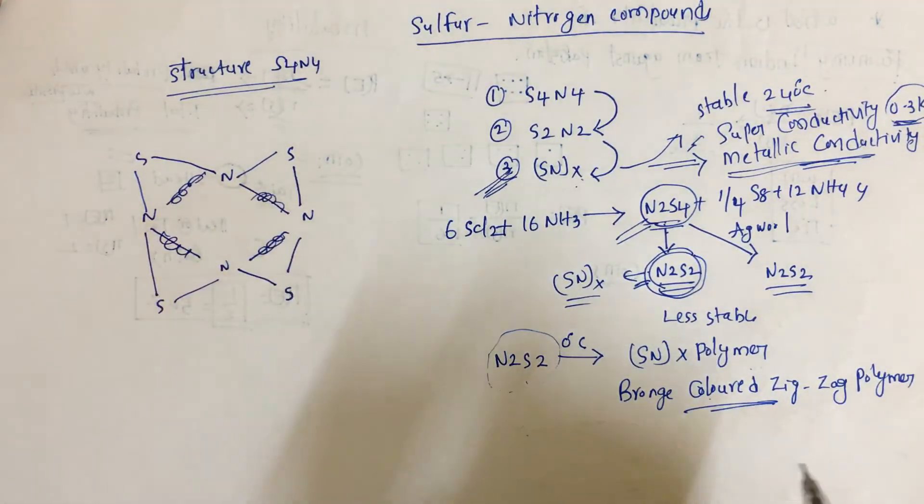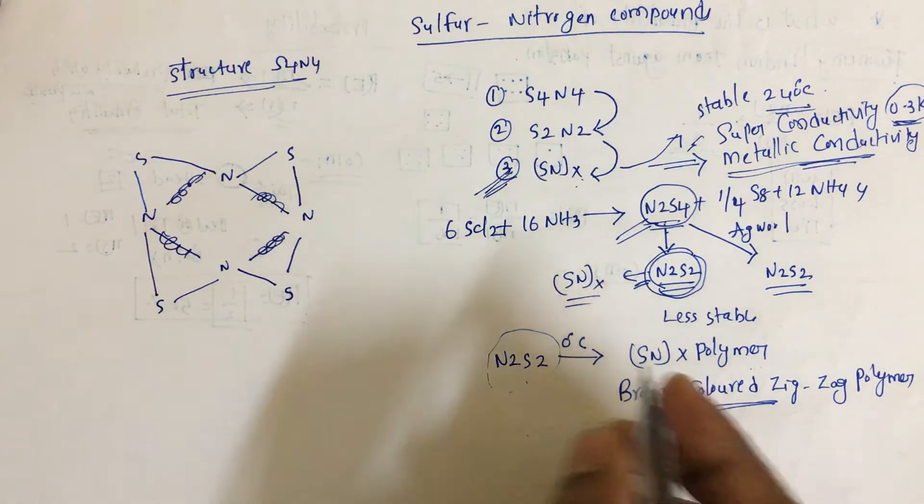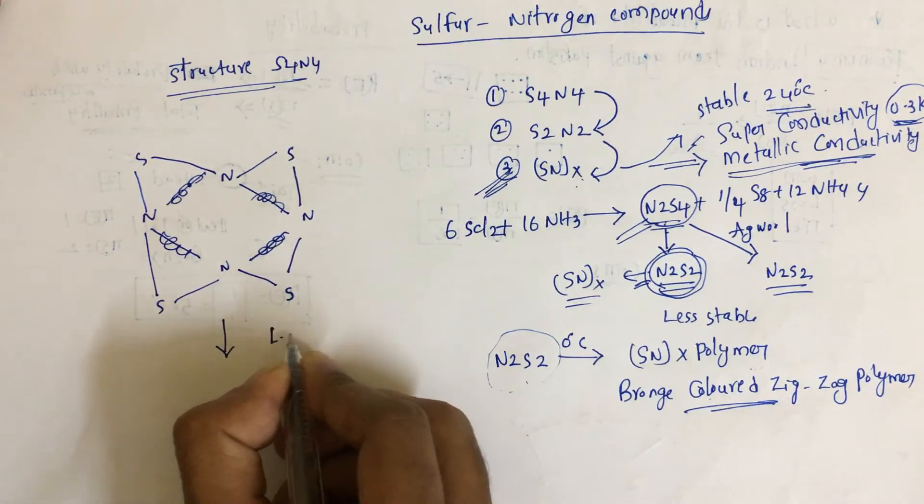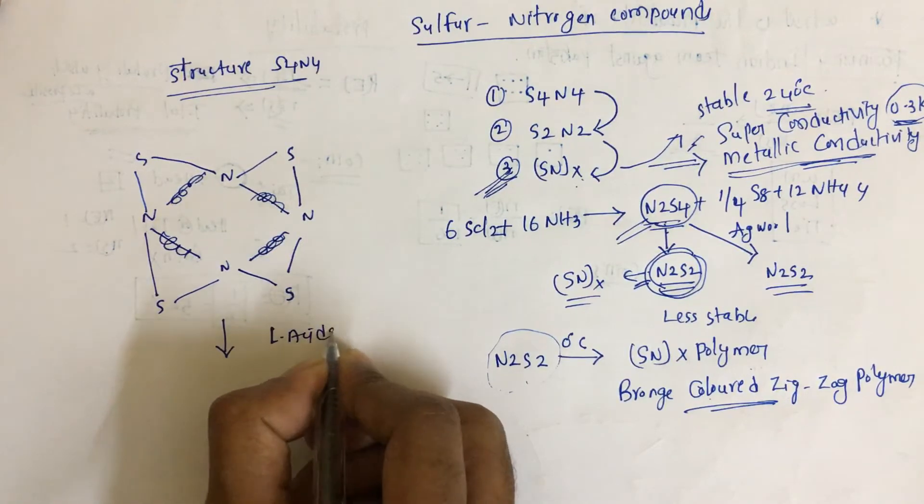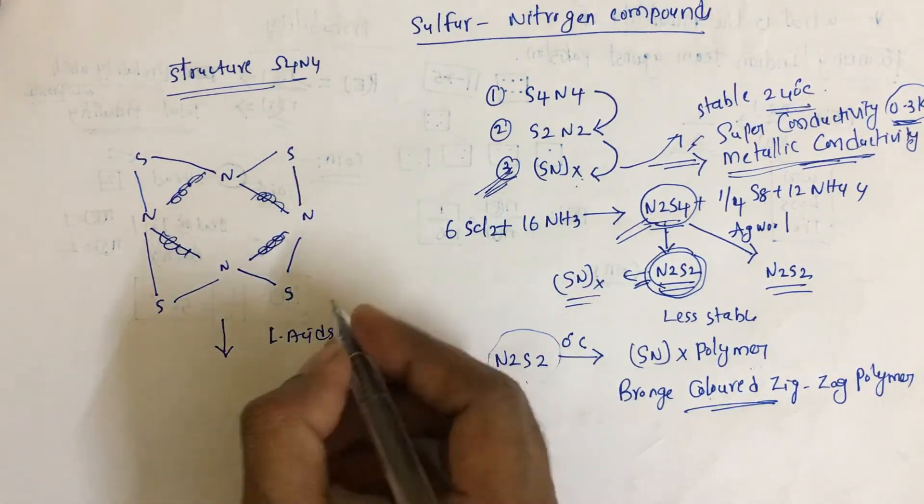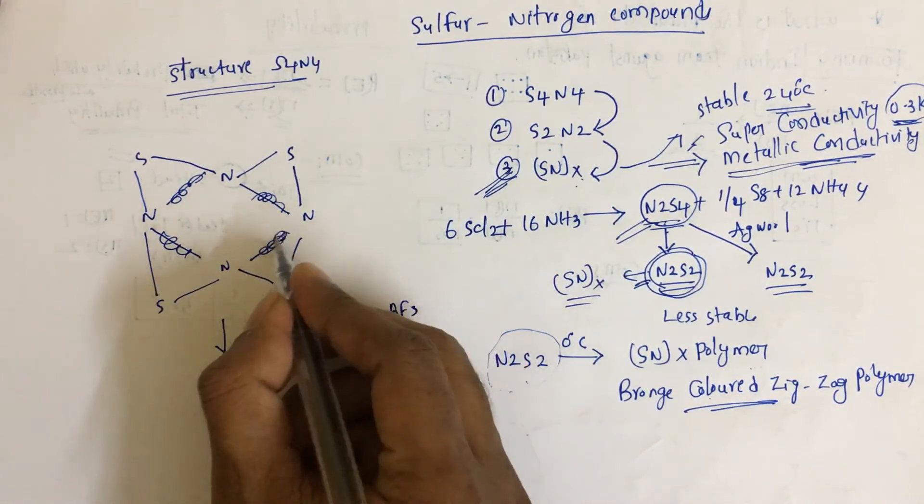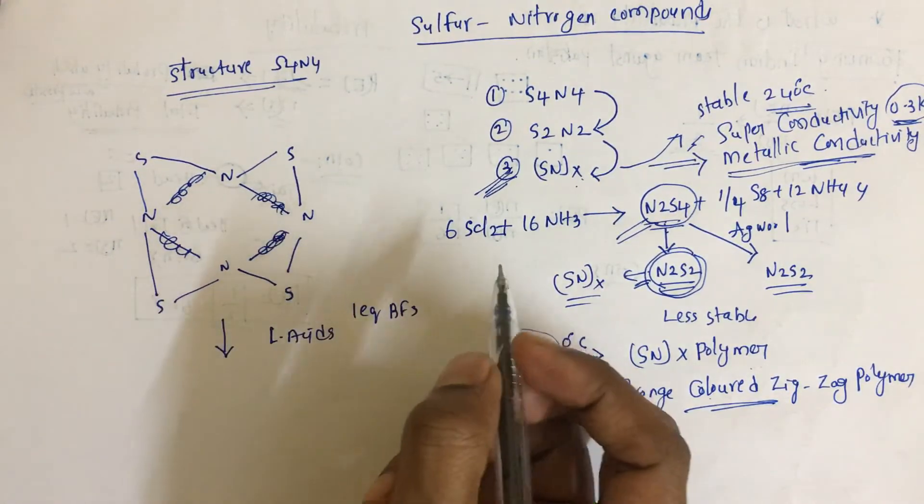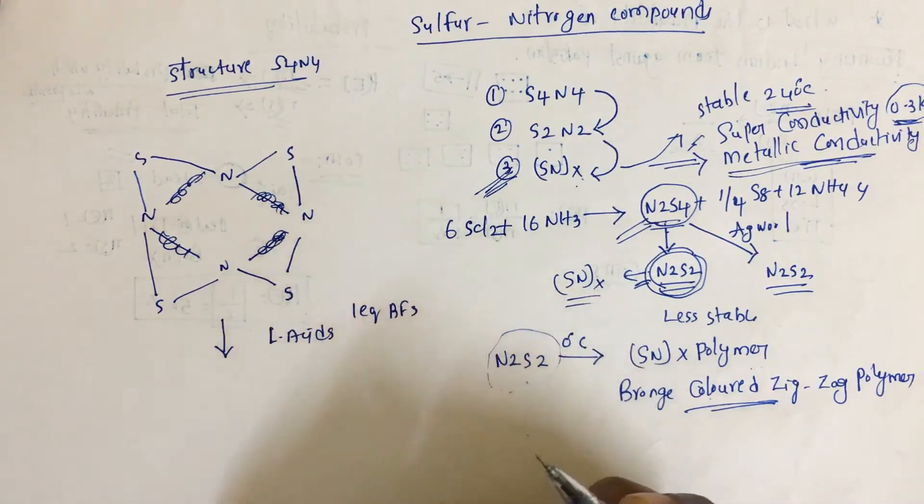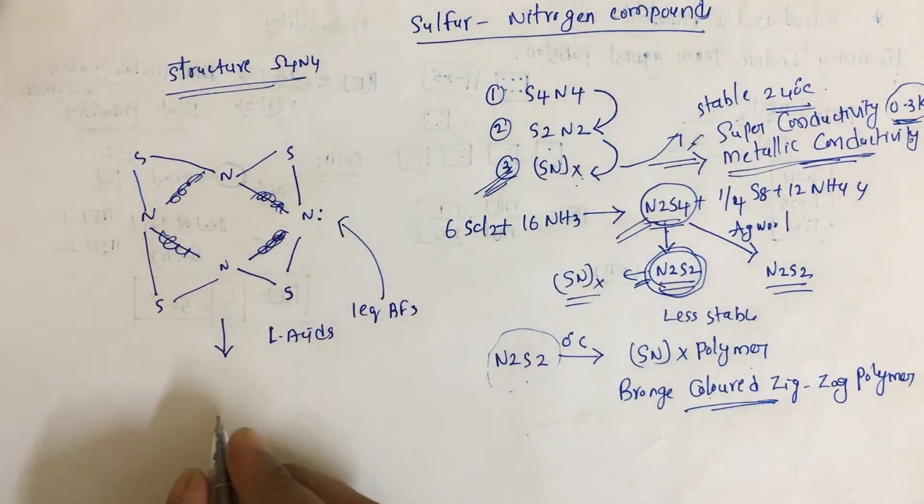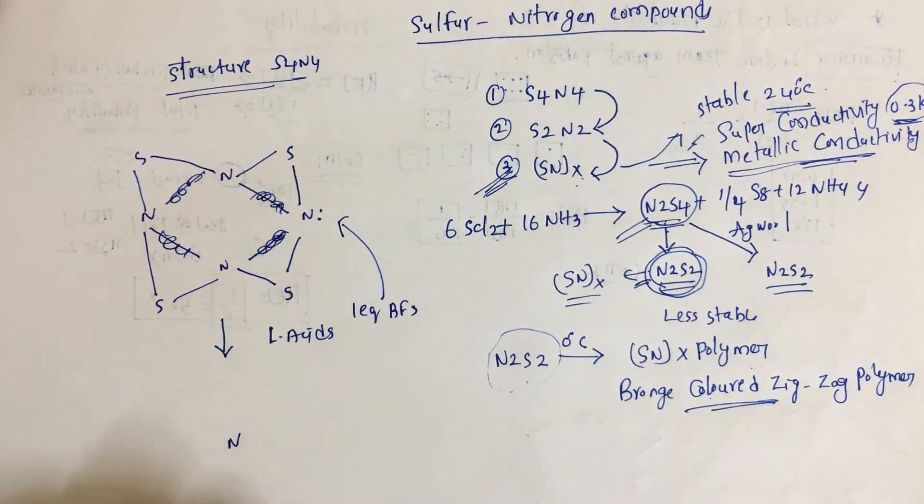S4N4 reacts with Lewis acids. If we take one equivalent of BF3, where can it react, on nitrogen or sulfur? We need to see which one is more basic. Nitrogen is more basic, so the Lewis acid goes and attacks only one nitrogen.